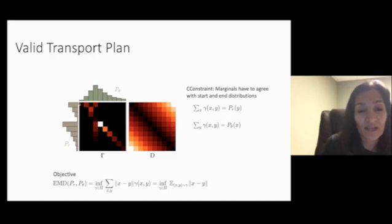This valid transport plan is actually a joint probability distribution. So you have the distribution P sub R here and the distribution P sub theta here. And you're looking at couplings between those. Each entry in this joint distribution says how much of the mass from here you need to distribute to each of these bits.